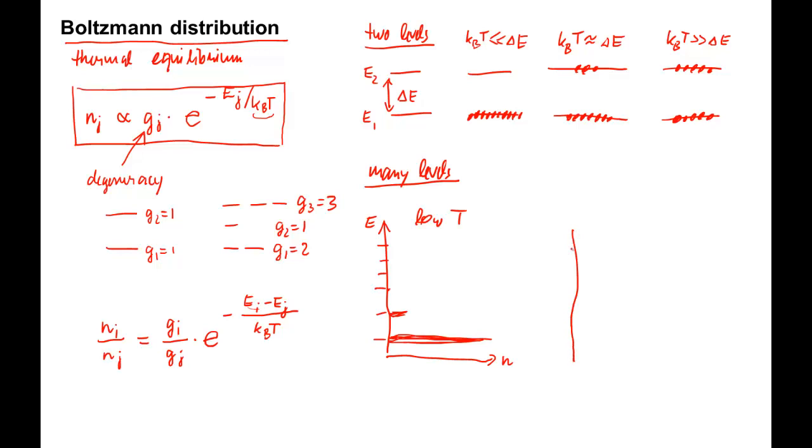At higher temperatures, higher states will be populated as well, and the lower states will be depopulated relative to the low temperature case. Remember that this Boltzmann distribution only applies at thermal equilibrium.